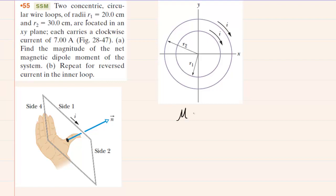We've learned from this chapter that the magnetic dipole moment, symbolized by mu, is equal to the number of turns in the wire multiplied by the current in the wire and then multiplied by the area of the wire.